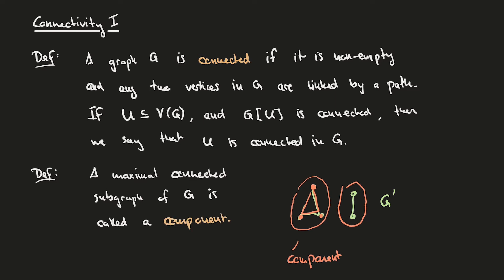Notice that in the definition of connectivity, we require any two vertices of G to be connected by a path. Now if G is very complicated, it might be difficult to see whether there is a path between two of its vertices, because paths are not allowed to intersect themselves. To make our life easier, we'll next introduce the notion of a walk, which is like a path except that it's allowed to intersect itself. We'll then show that any walk between two vertices contains a path between the same vertices.